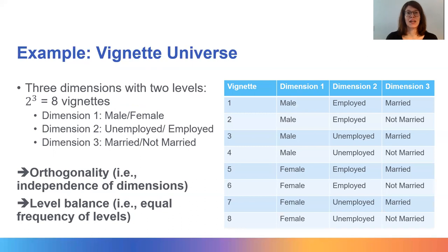Let us have a closer look at the vignette universe in our example. Our three dimensions are gender, employment status, and marital status. The corresponding two levels of each dimension are male-female, unemployed-employed, and married-not-married. The corresponding vignette universe is composed of eight vignettes because there are eight possible combinations of the levels of all dimensions. A useful feature of the vignette universe is that the dimensions and their interactions are mutually uncorrelated, or, to use a more technical term, they are orthogonalized. Whether a vignette person is male or female does not influence whether the person is unemployed or employed, married or not married.